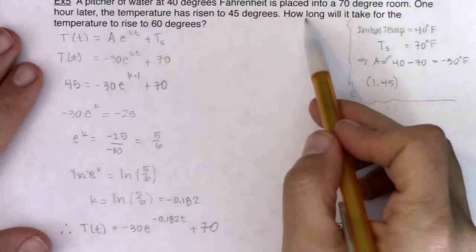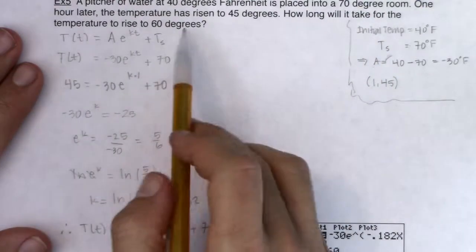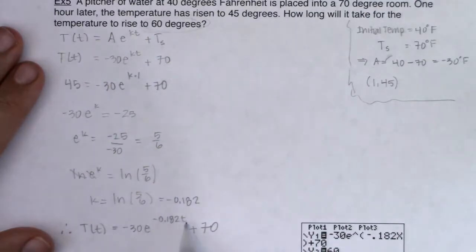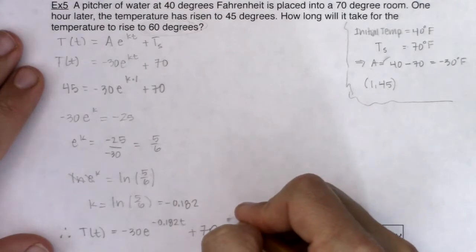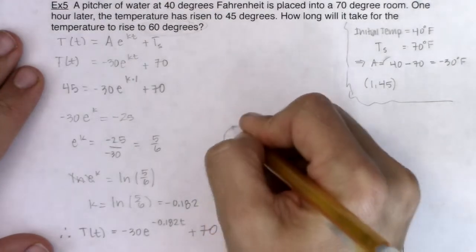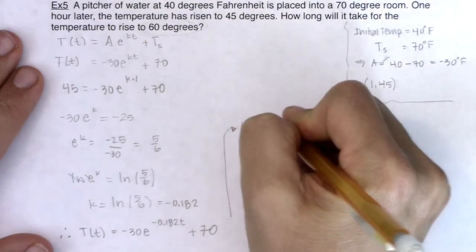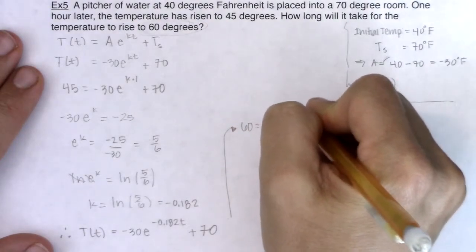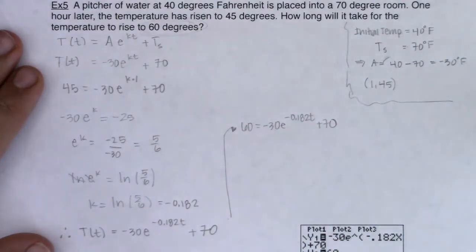But the question actually says, how long will it take for the temperature to rise to 60 degrees? So let's think 60 degrees. Is that a little t or is that a big t? And that's a temperature value. So I'm going to plug that in for a big t. So let's go ahead and plug that in for capital T and see where that leaves us. So I'll scooch right over here. I'll try and get this in. So we have 60 is going to be equal to negative 30e to the negative 0.182t plus 70.